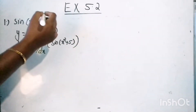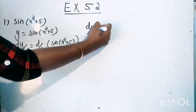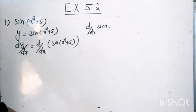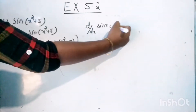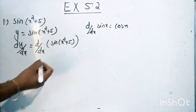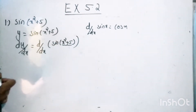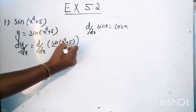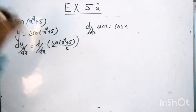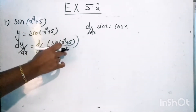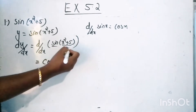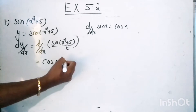The derivative d by dx of sine x is equal to cos x. Here, instead of x, we have x square plus 5. Suppose this is t — that is, x square plus 5 is t. Then we have sine t, and the derivative of sine t we will get as cos t. And the value of t is x square plus 5.